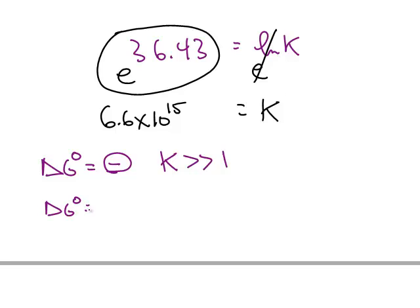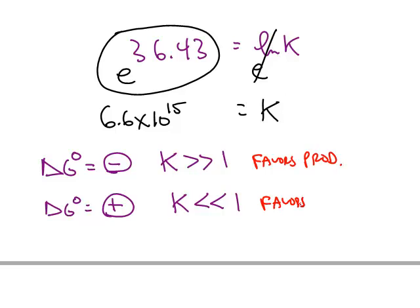If delta G standard is positive, meaning under standard conditions the reaction is not spontaneous, then K will be much less than 1. Remember, a large value of K favors the products, and a very small value of K favors the reactants.